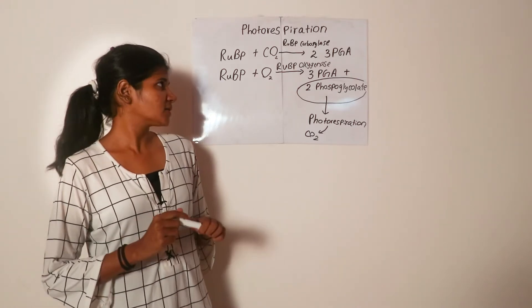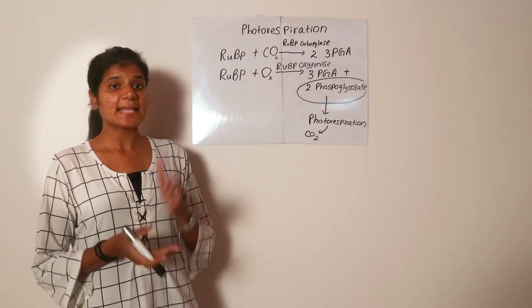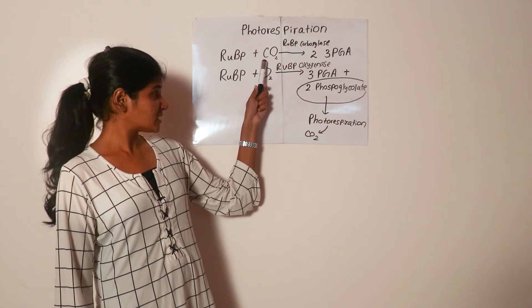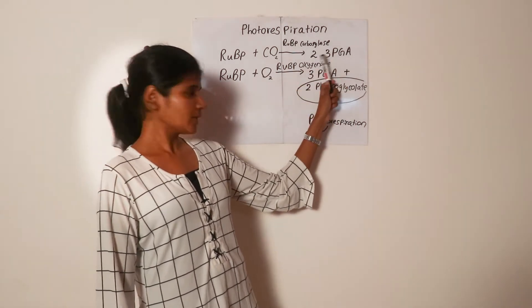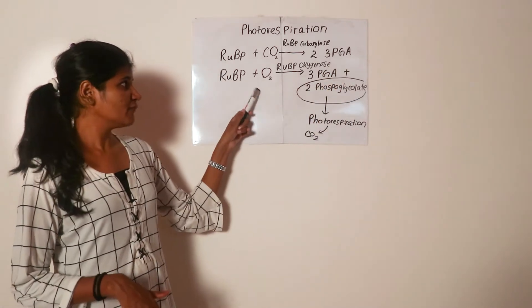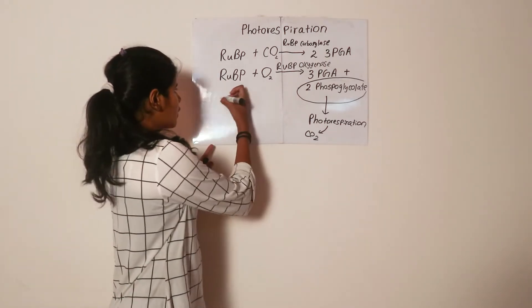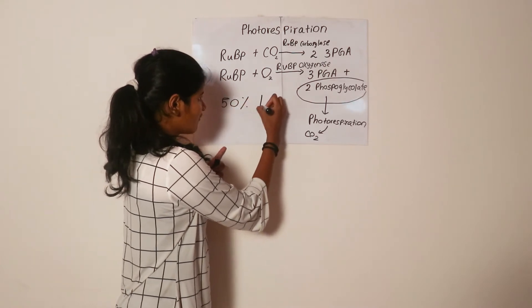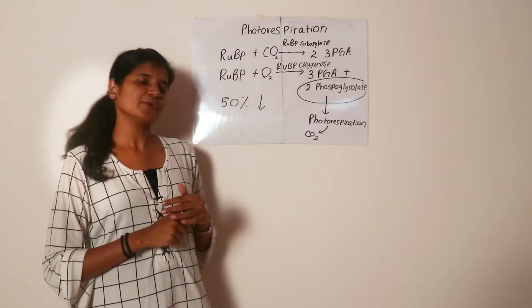The net product of photosynthesis would be 50% less. If RuBP reacted with carbon dioxide, we would get two molecules of 3-phosphoglycerate, but if it reacts with oxygen we only get one molecule of 3-phosphoglycerate. Therefore, a total 50% reduction of productivity in photosynthesis occurs due to photorespiration.